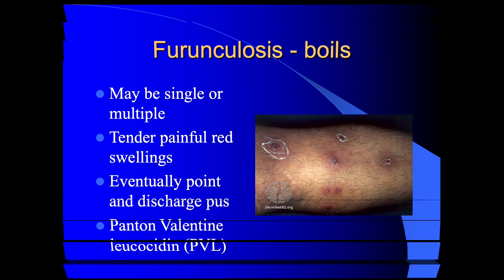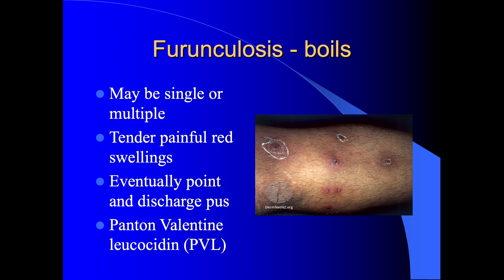Deeper infection of the hair follicles produces furuncles or boils, which may be single or multiple. Lesions tend to be tender, painful, and red, and eventually they'll point and discharge pus. There's a variant of Staphylococcus aureus called Panton-Valentine leukocidin (PVL), which produces a toxin preventing normal leukocyte function, causing very painful and recalcitrant furunculosis. It tends to occur more commonly in institutions such as boarding schools and military barracks, spreading easily from person to person. With extensive recurrent boils, PVL Staphylococcus aureus needs to be considered.